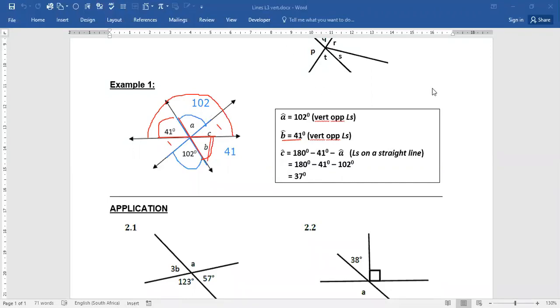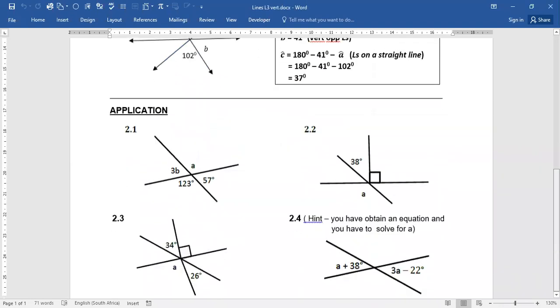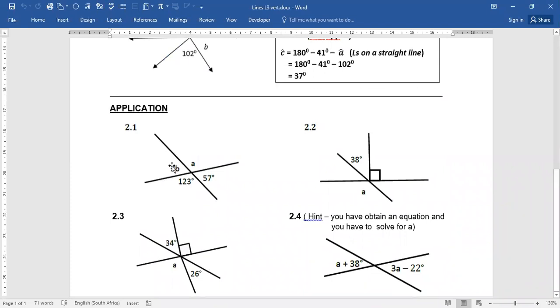If we're looking at the examples that are given for application, use the same idea to work out your unknowns. In this case, you're working at A and you're going to work at B. Remember, 3B is equal to 57. So you have to work at B. And your A will be equal to 123. Use the same idea here and here.